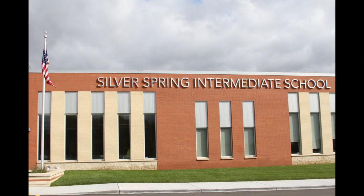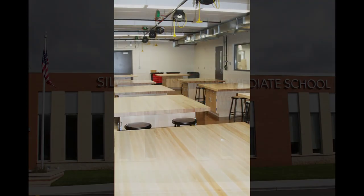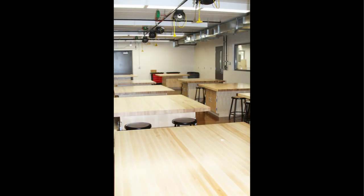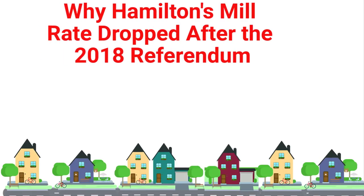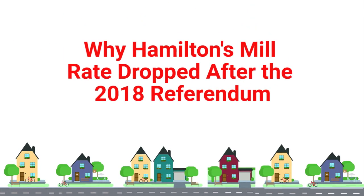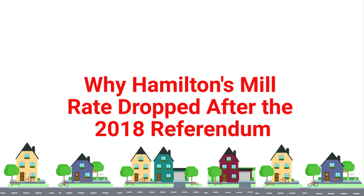The district is experiencing this low tax rate in spite of the fact that voters approved a referendum in 2018 that was expected to increase the mill rate by $1.37. This two-minute video takes a look at the factors that determine school tax rates and why Hamilton's mill rate actually dropped after passage of the last referendum.